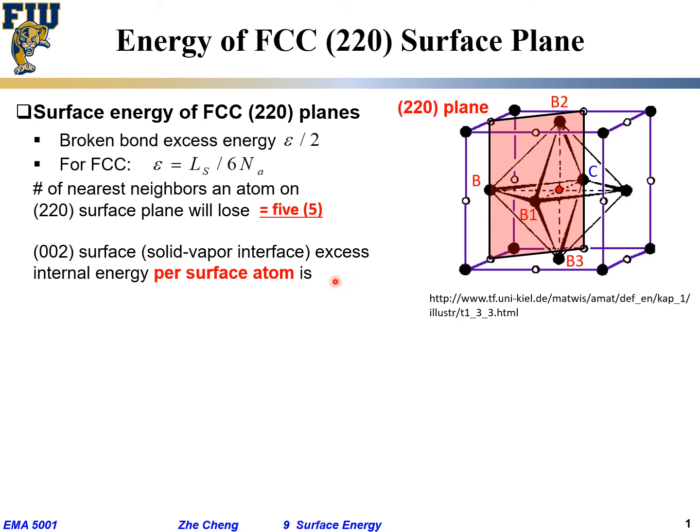As a result, the excess energy per atom on this (220) plane would be E_sv for (220), would be five times this half of bonding strength. This half of bonding strength, and the bonding strength, we get it from here.